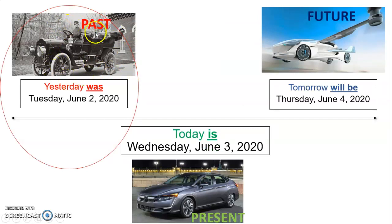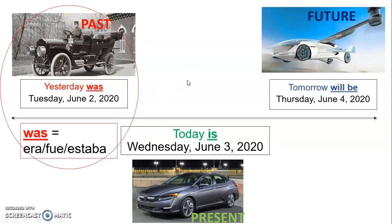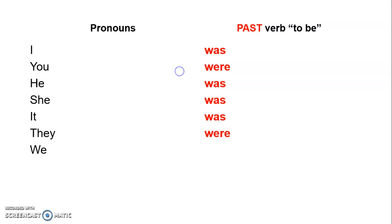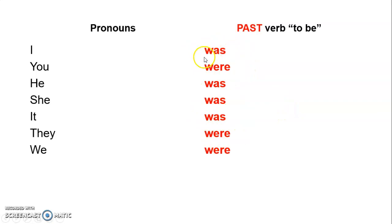Pero hoy día quiero enfocar en el past, en el pasado. So I want to talk about 'was' and 'were,' que significa era, o fue, o estaba. So: I was, you were, he was, she was, it was, they were, we were. Entonces si yo digo 'I was happy,' tal vez en este momento no estoy feliz, porque estoy hablando del pasado. Y hoy día solo quiero que pongan atención a las palabras 'was' and 'were,' porque mañana vamos a practicar un poco más con eso.